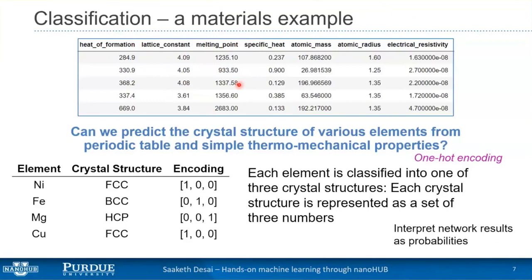For those familiar, nickel has an FCC (face-centered cubic) crystal structure, iron is BCC, and magnesium is HCP (hexagonal close-packed). But we can't quite work with these string labels, because this is a convention someone came up with. We need to numerically encode this so that our model can handle it and we can define concrete metrics. One way to do that is something called one-hot encoding, which you will almost always do for a classification task.